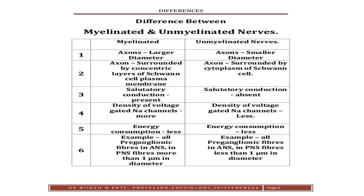Myelinated nerve fibers are present in preganglionic fibers of the autonomic nervous system and in peripheral nervous system fibers more than 1 micrometer in diameter, while unmyelinated nerve fibers are present in postganglionic fibers and peripheral nervous system fibers less than 1 micrometer in diameter.